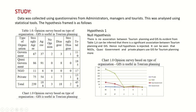Data was collected using questionnaires from administrators, managers, and tourists, and analyzed using statistical tools with hypothesis testing. Table 1 shows an opinion survey based on type of organization on GIS usefulness in tourism planning. Organization types include government, COSI, NGO, and private, with responses of strongly agree, agree, no opinion, disagree, and strongly disagree.